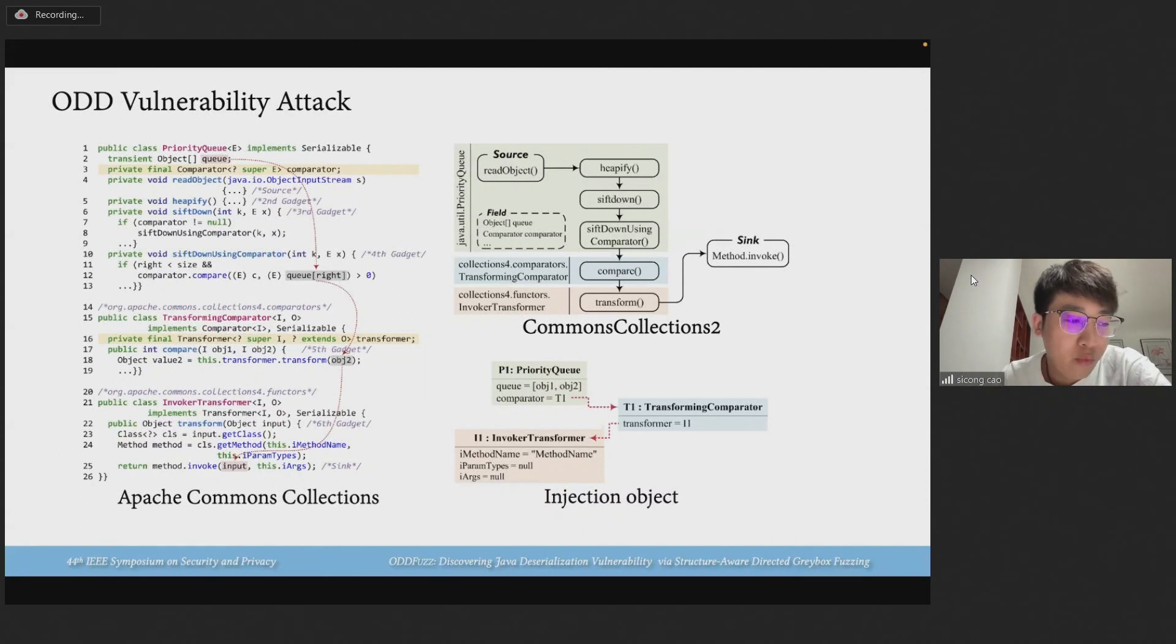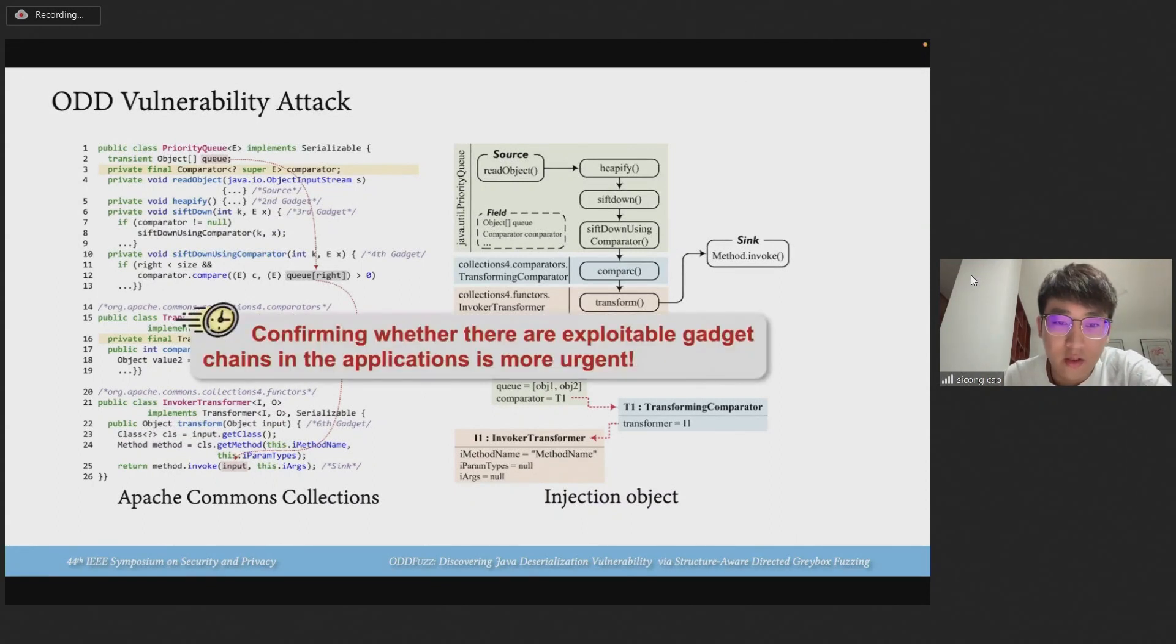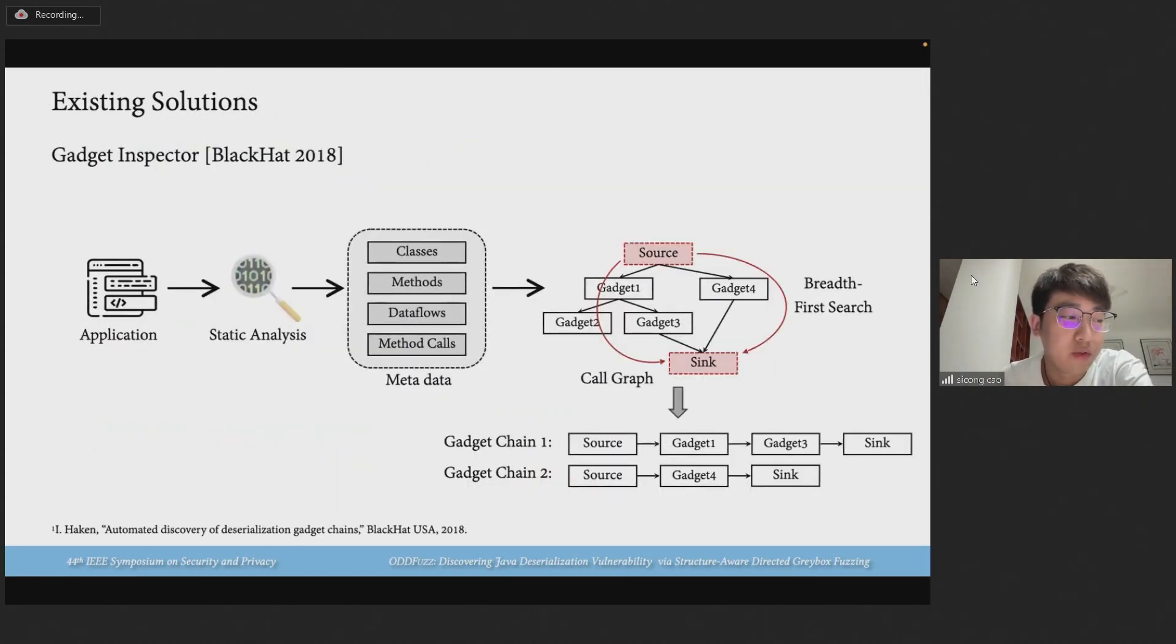Confirming where there are exploitable gadget chains in applications is urgent when hunting for Java deserialization vulnerabilities. To detect exploitable gadget chains, Gadget Inspector leverages static analysis and symbolic execution to compute the propagation paths of tainted parameters and performs breadth-first search to identify attacker-controllable gadget chains. However, due to such impurity, static solutions may suffer precision issues and result in high false positive rates. Furthermore, it requires manual inspection of the reports.